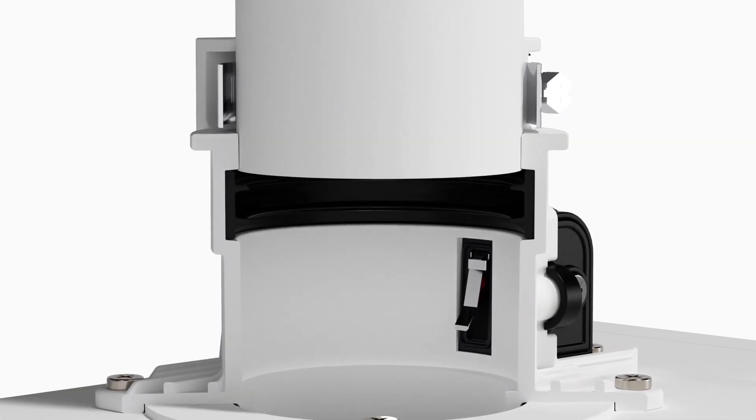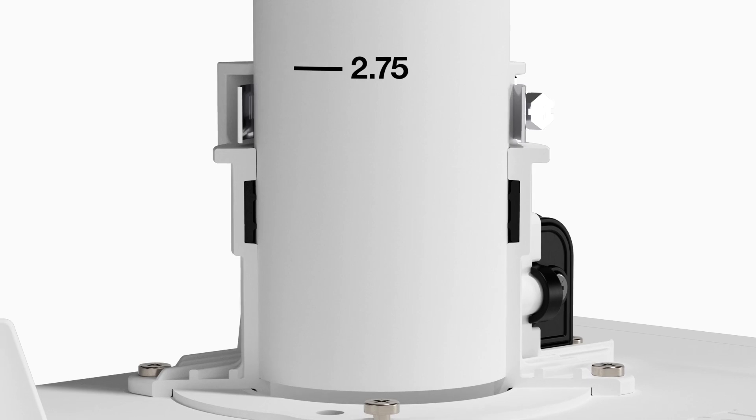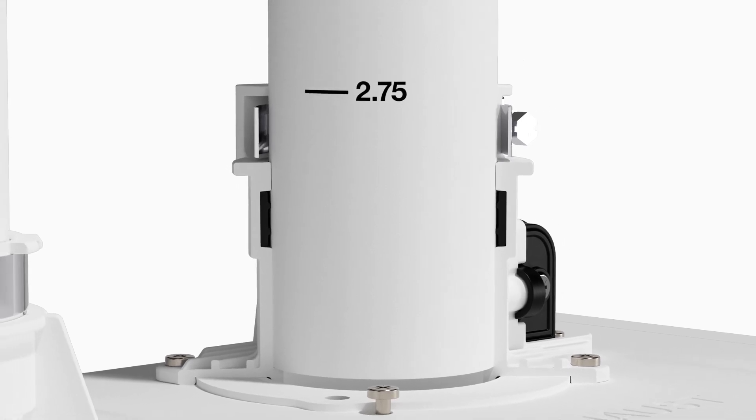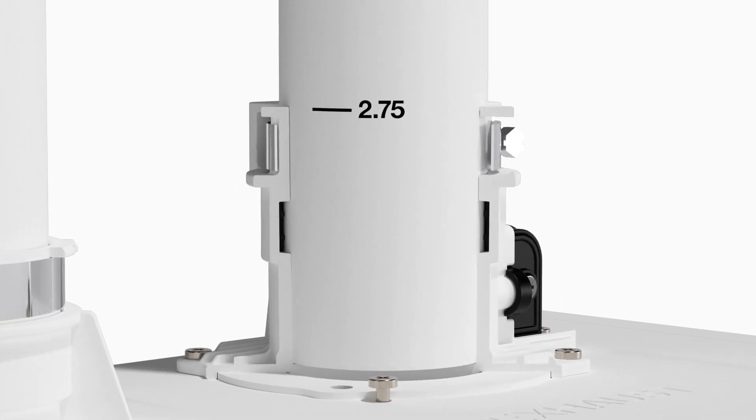Insert the pipe into the vent collar to start the vent run. Make sure to completely slide the vent into the collar until the end makes contact with the bottom of the socket.